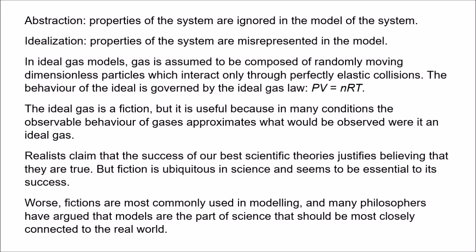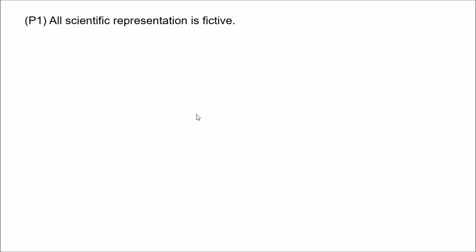There are a few different arguments in the literature that appeal to the use of fiction against realism. One argument uses the notion of realism as the aim of science, and this is presented by Mauricio Suarez in his article 'Fictions, Inference and Realism.' He states the argument as follows. Premise one: all scientific representation is fictive or fictional — models necessarily involve claims that are known to be false.